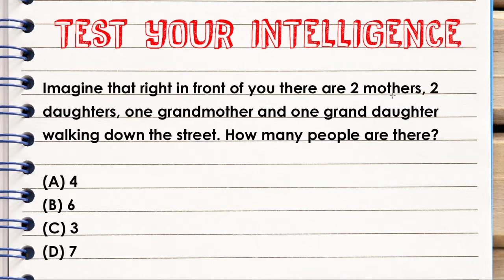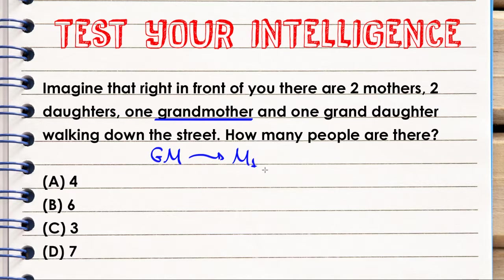If I have two mothers, two daughters, one grandmother, and one granddaughter walking down the street, I'll begin with the oldest — the grandmother. I'll call her GM. This grandmother is also a mother — mother number one. She is the daughter of her own mother, but we won't count that. She is both a grandmother and a mother because her daughter is also a mother.